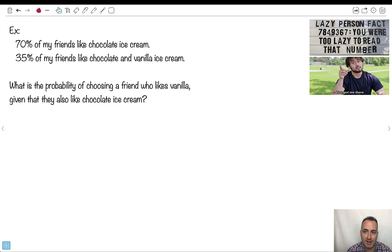I like this one, lazy person number fact. You're too lazy to read that number. Like, got me there. All right, so we have an example here. 70% of my friends like chocolate ice cream. And 35% of my friends like chocolate and vanilla. So what's the probability of choosing a friend who likes vanilla given that they also like chocolate?